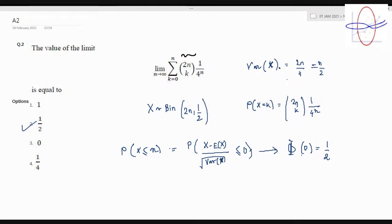Just by - since expectation of X is equal to n by 2... yeah, it's equal to n by 2. I think there are some errors over here. Oh yeah, expectation of X is equal to n. Yeah sorry, expectation of X is equal to n because 2n times half.